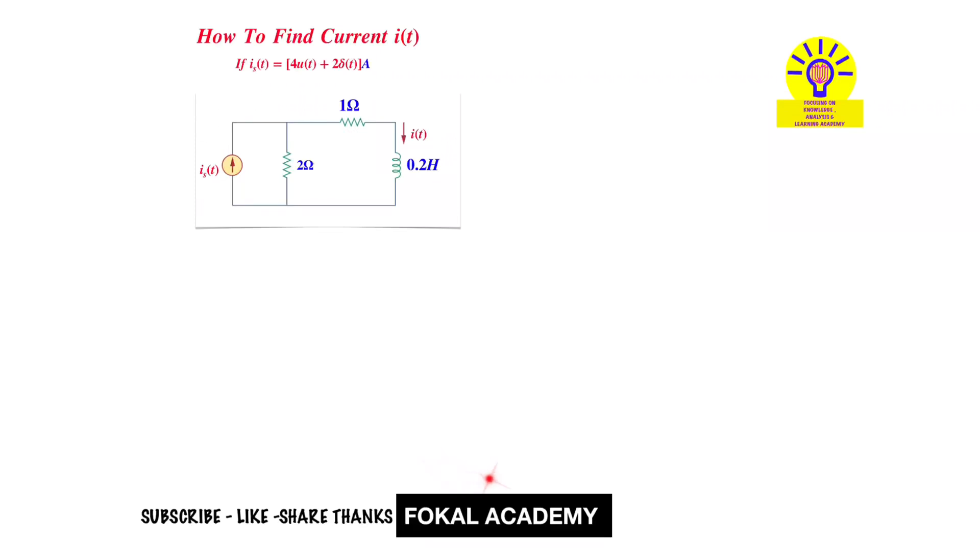Hi everyone, welcome to Focal Academy. In this problem, a circuit is given here, and the source current was given as 4 times U of T plus 2 times delta of T amperes.